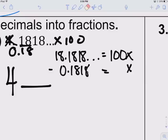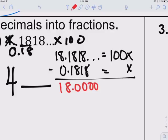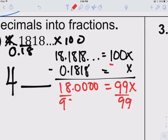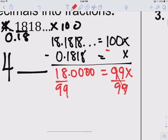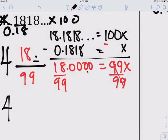We get that, we get 18.0000 equals to minus that, that's a 1. Remember, 99x, divide by 99. x then is equal to 18 over 99, which can be reduced. Divide by 9 here, is 2 over 11.